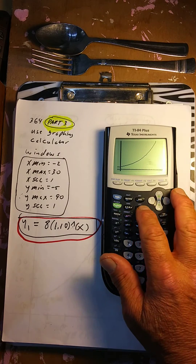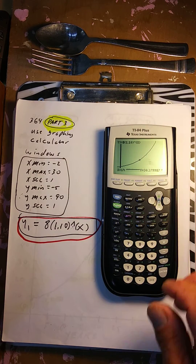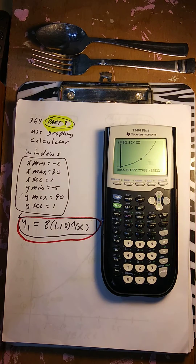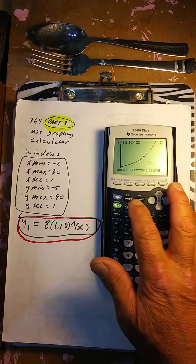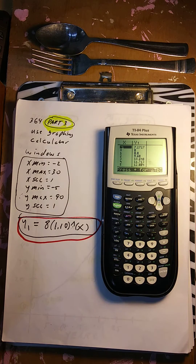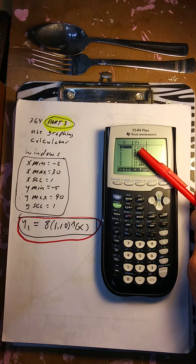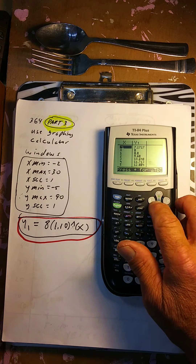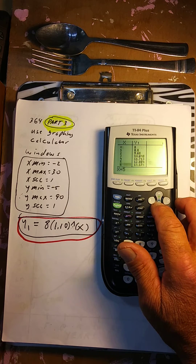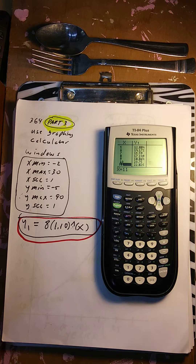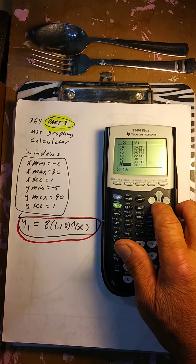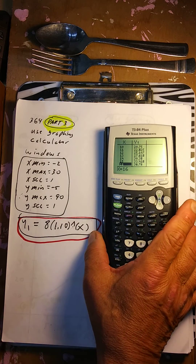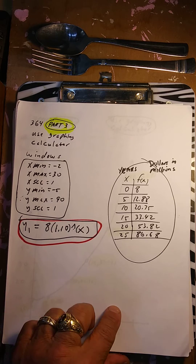You can do trace — it'll give you numbers like at 15.02, it's going to be 33.485. Or you can do second table: at 0 it's 8, at 5 it's 12.884, at 10 it's 20.95. Keep going — whatever numbers you need, you can get them from there.